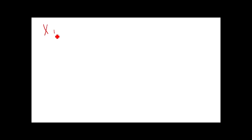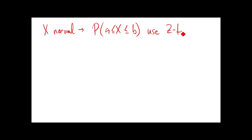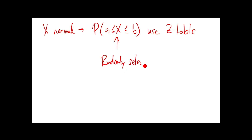What I want to look at now: so far, we know that if X has a normal distribution, then we can calculate probabilities like the probability of X between a and b. We can do that using the Z-table. But the thing about this is that this is when you only randomly select one individual - this is the probability of seeing one observation in that range.